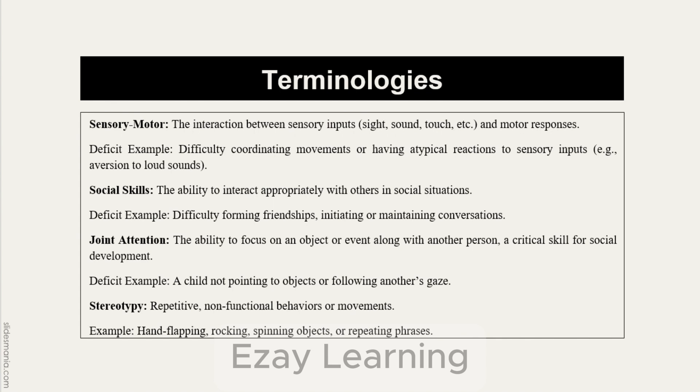The last term is stereotypy. Like the word stereotype suggests something recurring, stereotypy refers to repetitive, non-functional behaviors or movements — for example, hand flapping continuously, rocking, spinning objects, or repeating phrases. If a behavior is happening repetitively and continuously, it is called stereotypy movement or stereotypy behavior.